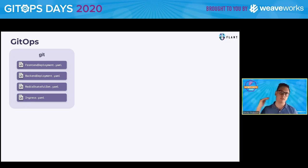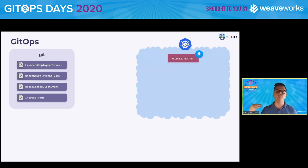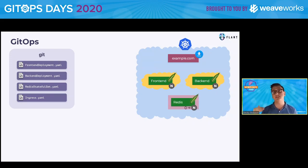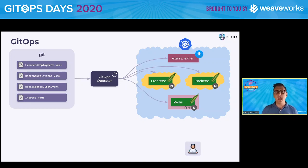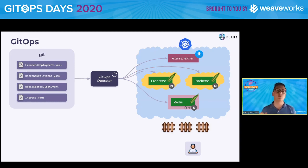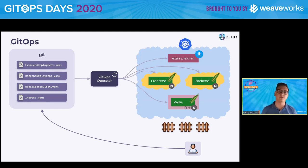So we have GitOps with all YAML manifests for Kubernetes, and we have Kubernetes with objects: we have Ingress, a few deployments, and a StatefulSet with Redis. We have a GitOps operator which is responsible for syncing the state and getting Kubernetes to the desired state. If some user changes anything in Kubernetes, the GitOps operator will fix it, creating a small fence that motivates users not to go directly to Kubernetes but to the source of truth.